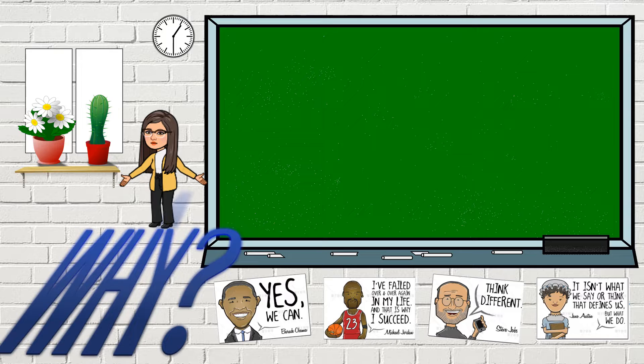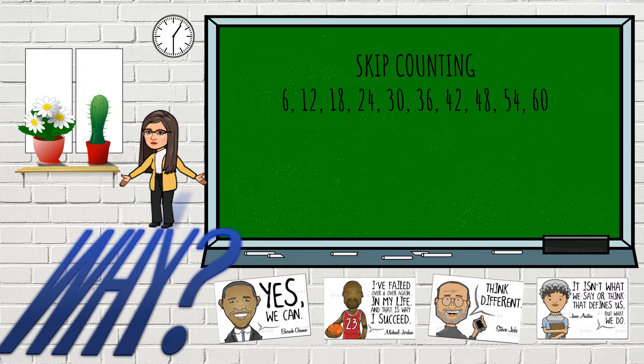I realize that some of you have been using skip counting when you have to multiply a number. For example if you need to multiply a number involving a factor of 6 you will go by 6, 12, 18, 24, 30, 36, 42, 48, 54, 60.